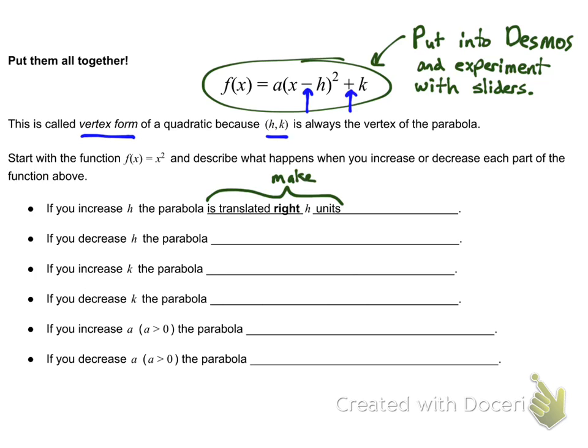What I want you to do now is play with the sliders and make sure - I filled in the first blank for you - make sure that if you increase h, the parabola is translated right h units. If you want to reset it to f(x) = x² each time, make sure h and k are both zero, so (0,0) is the vertex of x², and a is 1. If you start from that as a basis, then you can fill out all the rest of these.